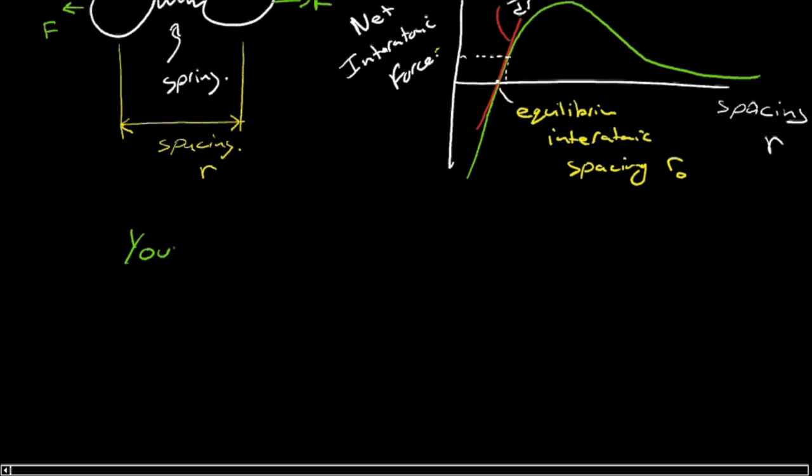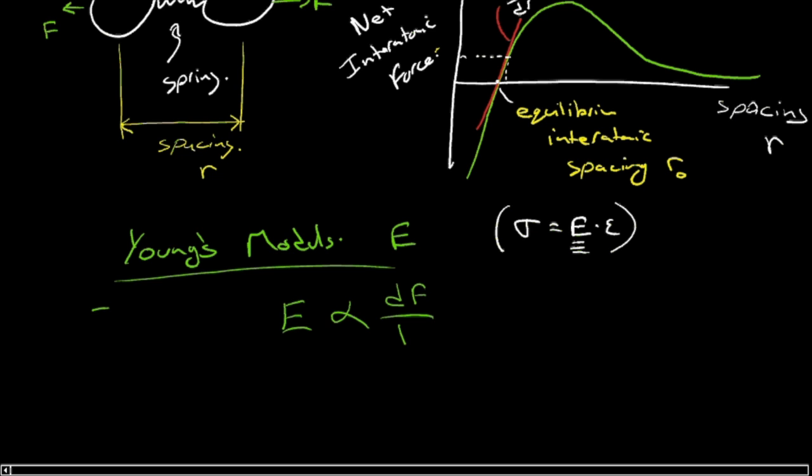That the Young's modulus E, and just to make sure that we're all talking about the same thing here, this is E from the fame of Hooke's law, sigma equals E times epsilon. And that's the Young's modulus that we're talking about. The Young's modulus is proportional to the slope of the interatomic force separation curve at r equals r0.